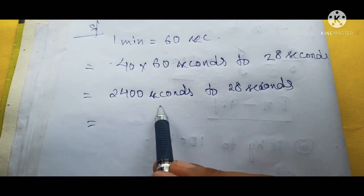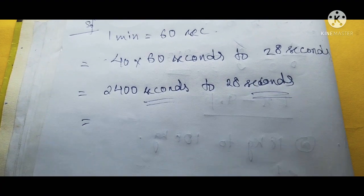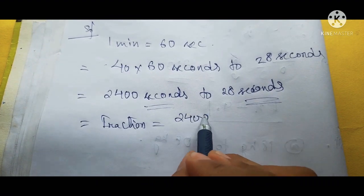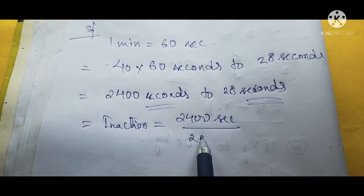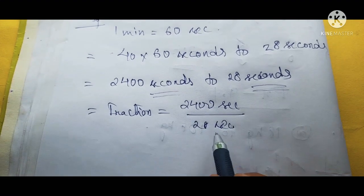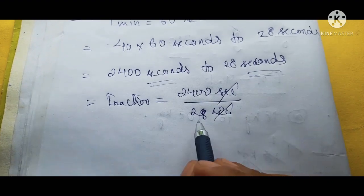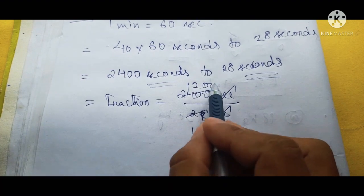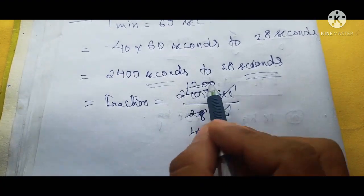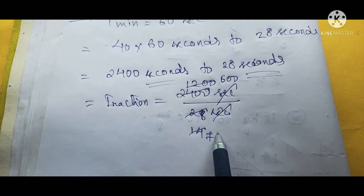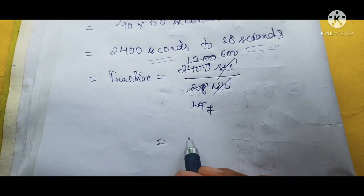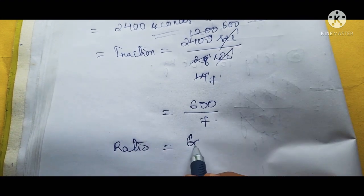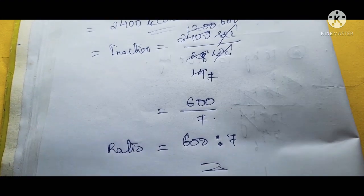Since both are now in seconds, we make them into a fraction: 2,400 seconds by 28 seconds. The seconds cancel. We cancel by 2: 2 ones are 2, 2 fours are 8; 2 sevens are 14, 2 sixes are 12. We cannot simplify further, so we get the fraction 600 by 7. Converting to a ratio gives 600 is to 7.